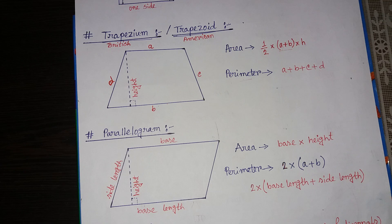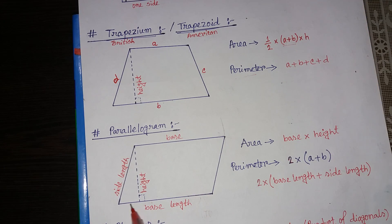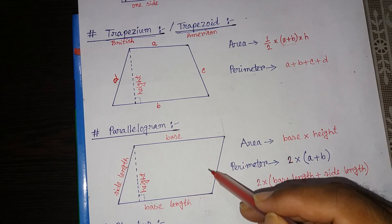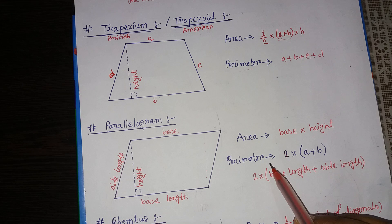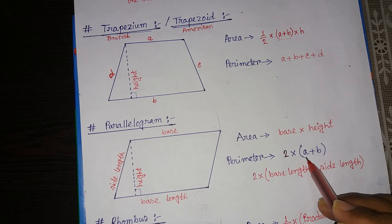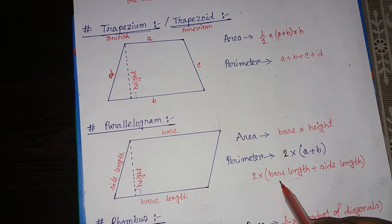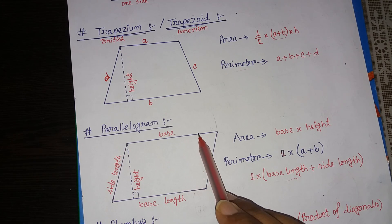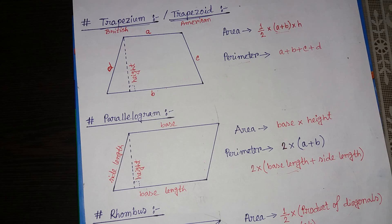The next shape is the parallelogram — a quadrilateral whose opposite sides are equal and opposite angles are the same. The area of a parallelogram is base multiplied by height. This line is the base and this line is the height. The perimeter formula is 2 multiplied by the bracket a plus b, where a represents the base length and b represents the side length — just like the rectangle.